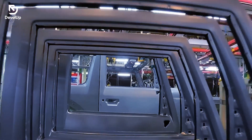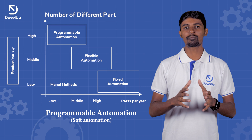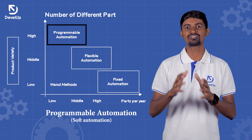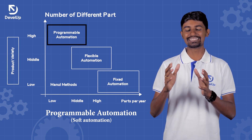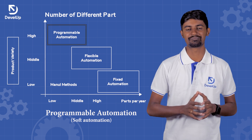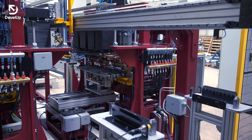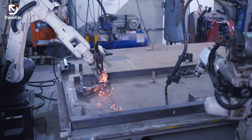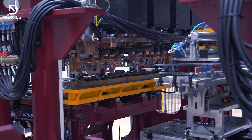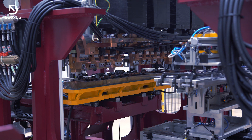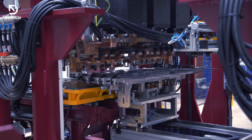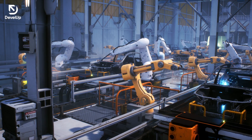With Fixed Automation you can do whole modification for the same product in mass production. Programmable Automation is exactly the opposite of Fixed Automation. If you have a variety of products with moderate volume production, you use Programmable Automation, where the product change requires reprogramming and reuse.